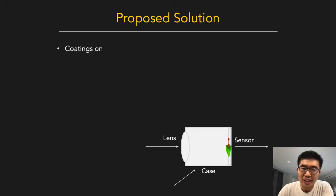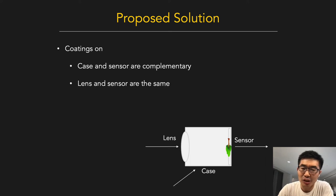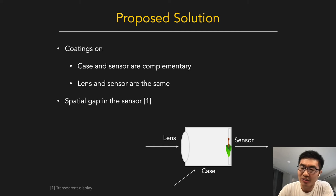The proposed solution is we can put coatings on the case, sensor, and lens. The coatings on the case and sensor are complementary, such that there is no stray light. The coatings on the lens and sensor are the same, such that light can arrive at the sensor. There is a special gap in the sensor to let partial light pass through, which refers to the design of a transparent display.